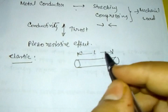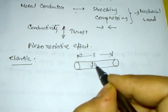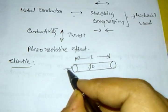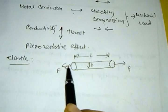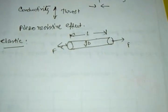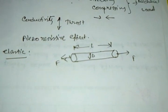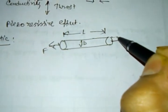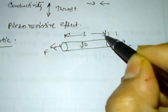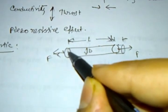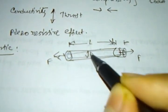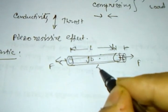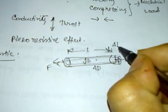Let us consider that the length is L and the diameter is D, and we are giving some kind of force here — it is a stretching force F, and we are applying this stretching force at both of the two ends. Because of that there will be some change in diameter and some change in length. The change in diameter is delta D and the change in length is delta L.